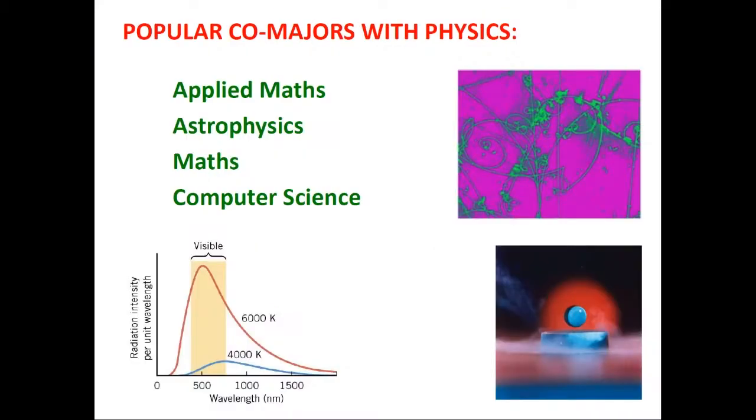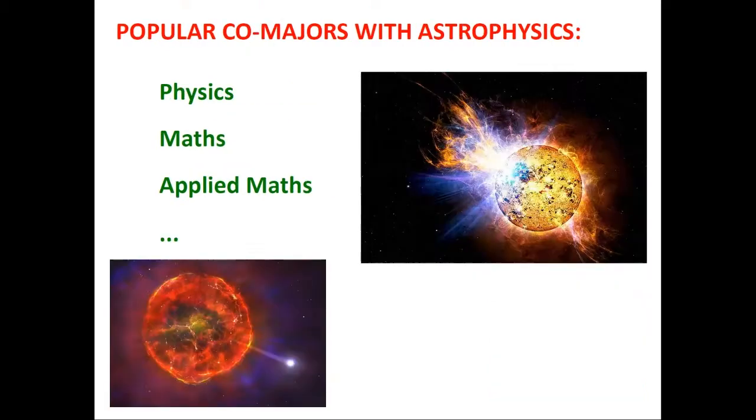So that's astrophysics and physics. I'll just mention that together with physics and astro, there are a number of other subjects that one can pair up with them to form a really quite interesting and varied degree. So there's an example. Here are some examples of co-majors with physics. Here are some co-majors with astro. In principle, though, anything is possible as long as there isn't a timetable clash.